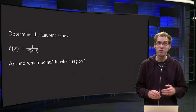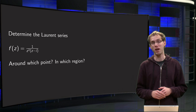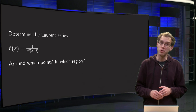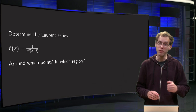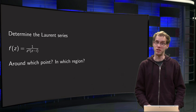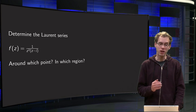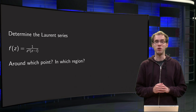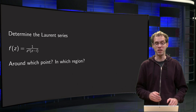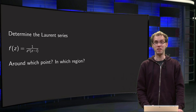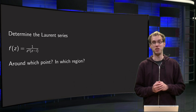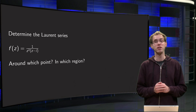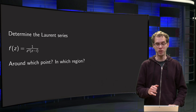We will use the same function f all the time, but we will be using different centers, which means that we will find a number of different Laurent series for the same function. We take our function f = 1/(z² · (z - i)), and we want to find Laurent expansions. The first question is: around which center point, and if we have some center point, in which region?